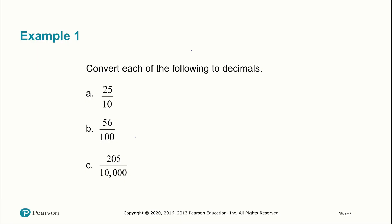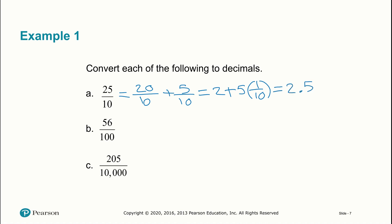Now we convert fractions to decimals. For 25 over 10, it's an improper fraction, so we break it up as 20 over 10 plus 5 over 10, which gives us 2 and 5 tenths, written as 2.5. For 56 over 100, it's a proper fraction — just 56 hundredths — written as 0.56. For 205 over 10,000, we start from the right: 5, 0, 2, and we need as many digits past the decimal as there are zeros in the denominator.